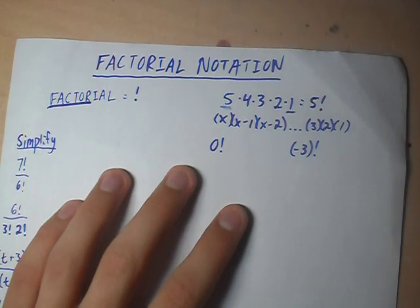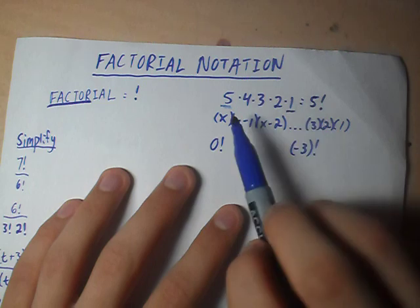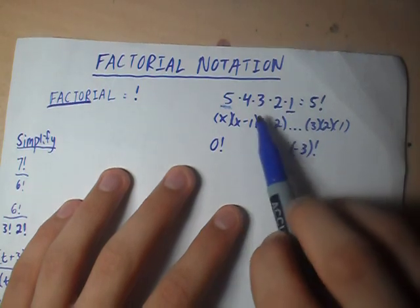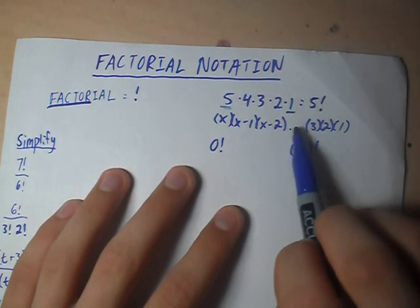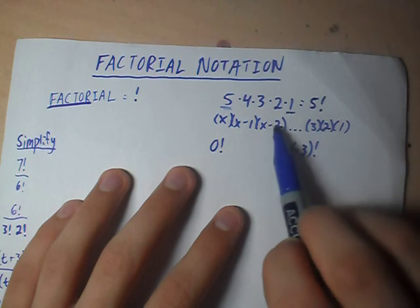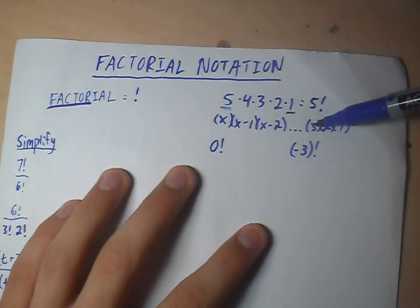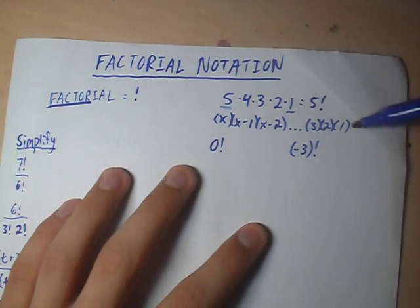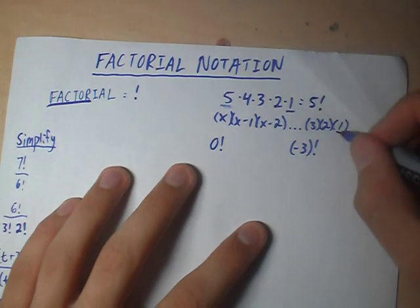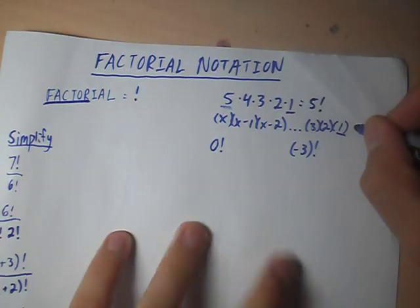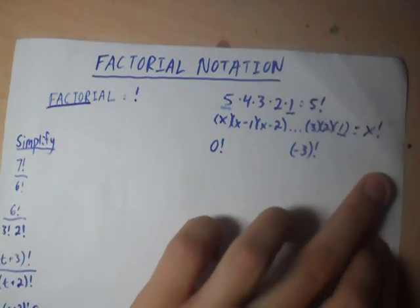We can do this with a variable as well, as seen in the second example. We've got x, x minus 1, x minus 2 — this shows it's a pattern decreasing by one each time — going down to 3, 2, and 1. So it goes down to 1, just like the last one, and this can be expressed as x factorial.